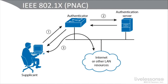If the switch notices someone is on the port and doesn't receive an EAPOL start frame, and it is a dot one X authenticator, it will send a request ID. So one way or another, the supplicant or the authenticator will get the process started. Credentials are then sent to the authenticator, which passes them back to an authentication server.